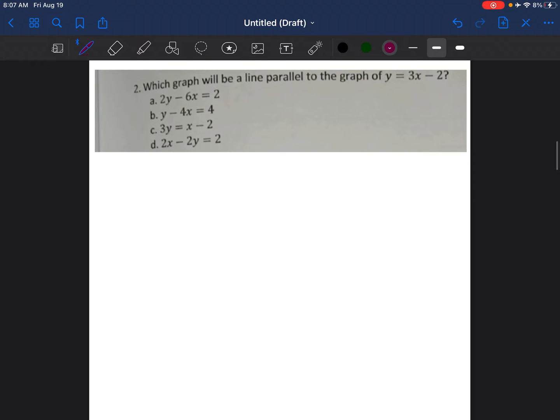It says which graph will be a line parallel to the graph of Y equals 3X minus 2. So anytime we're talking about lines and you want to find if a line is parallel, then you need to have the same slope. This equation is Y equals 3X minus 2, and it's written in the slope intercept form, Y equals MX plus B form, where M, the value before the X, is the slope.